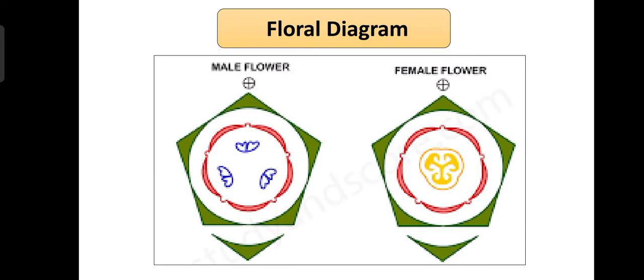Floral diagram: In both flowers, the first two whorls are the same. In the female flower, the ovary is tricarpellary syncarpous and the placentation is parietal, but it appears axile.